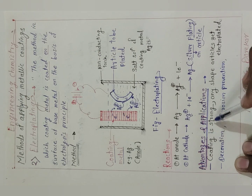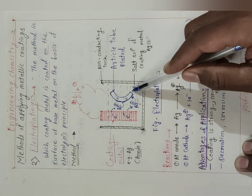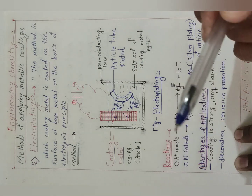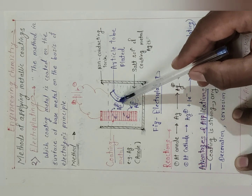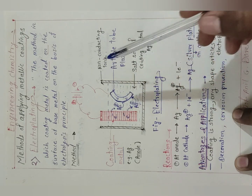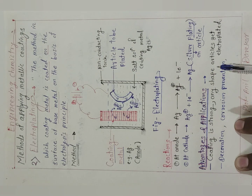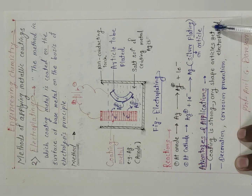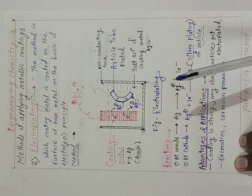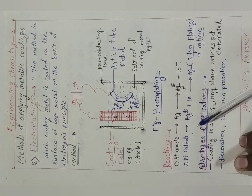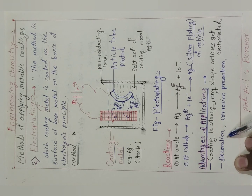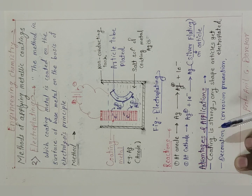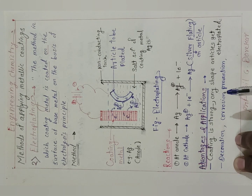Advantages and applications: the coating is stronger, and any shape article can get electroplated — there is no restriction on shape or size. Electroplating is most commonly used for decoration purposes, giving a coating of another metal on the surface of an article. Electroplating also helps to prevent corrosion of metal.